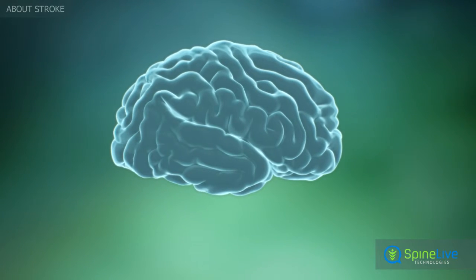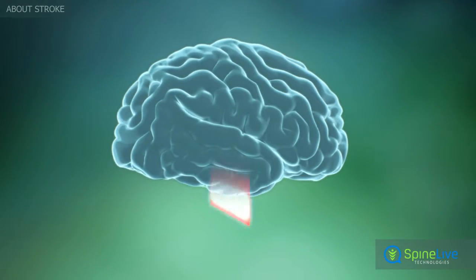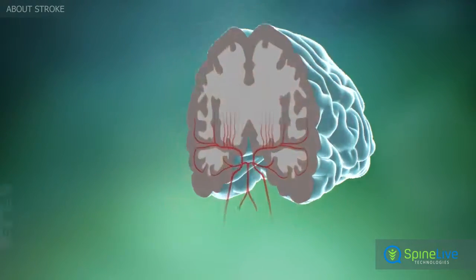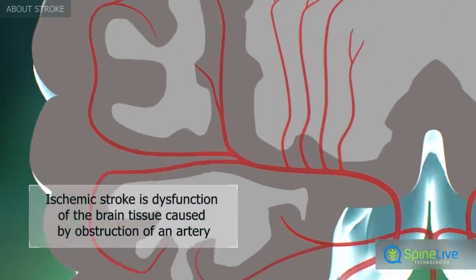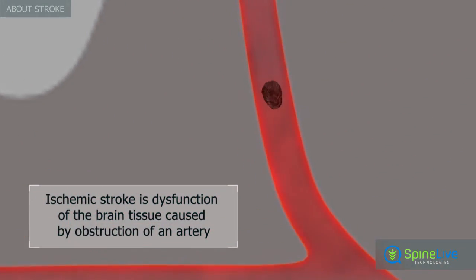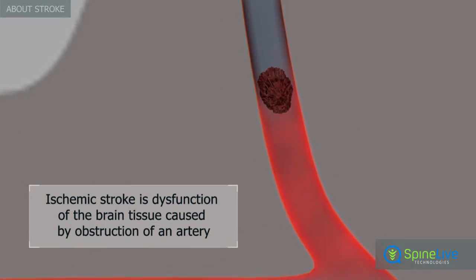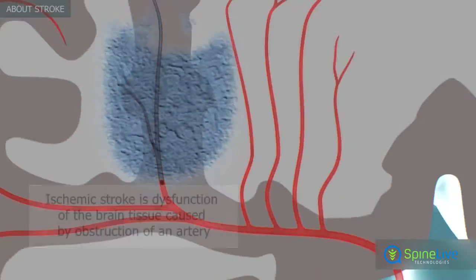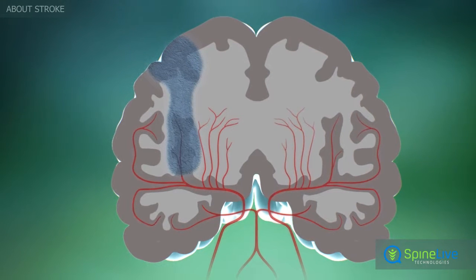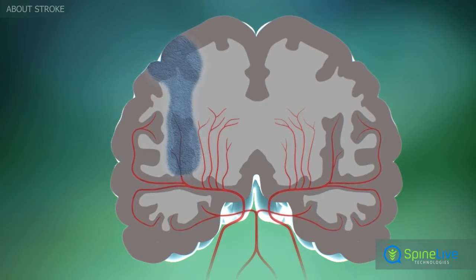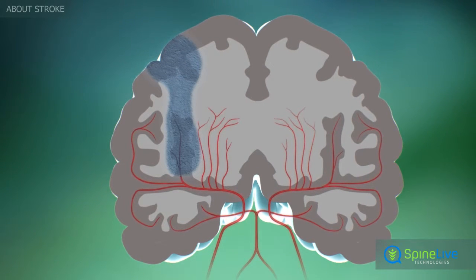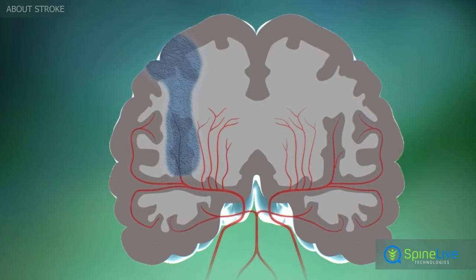There are two major types of stroke: ischemic and hemorrhagic. In an ischemic stroke, dysfunction of the brain tissue occurs due to obstruction of an artery that supplies blood to part of the brain.